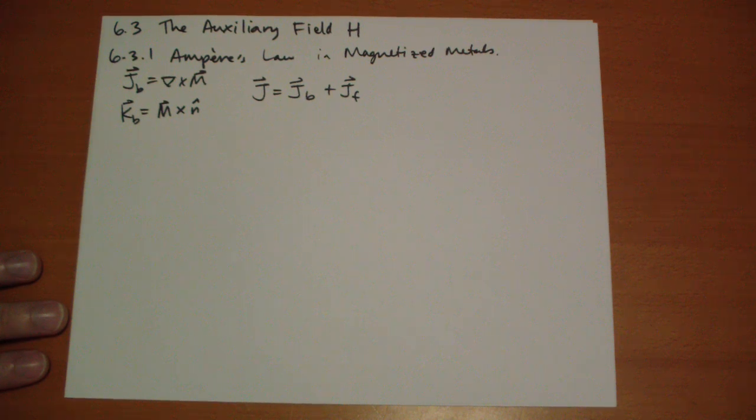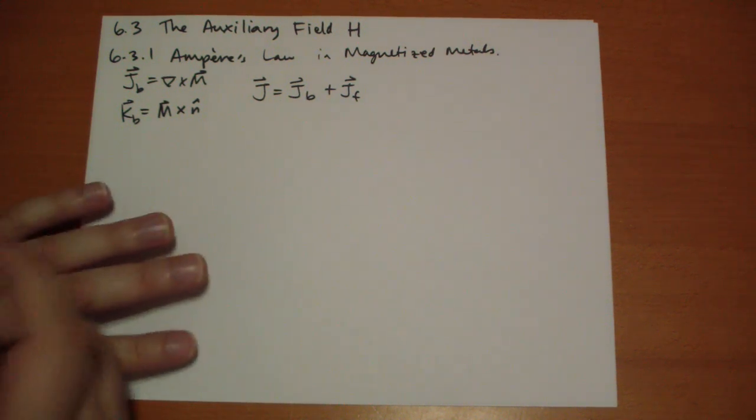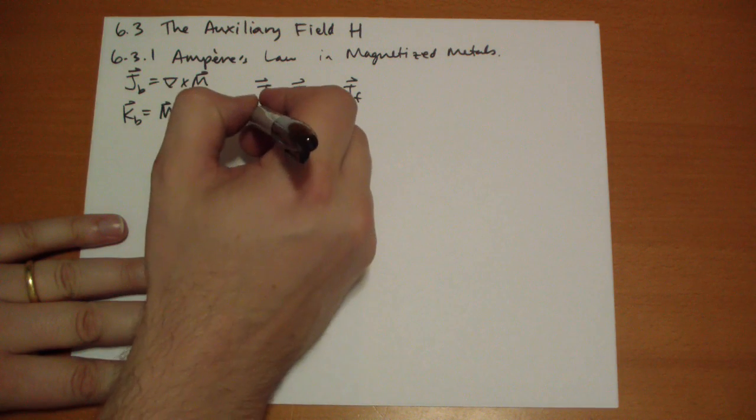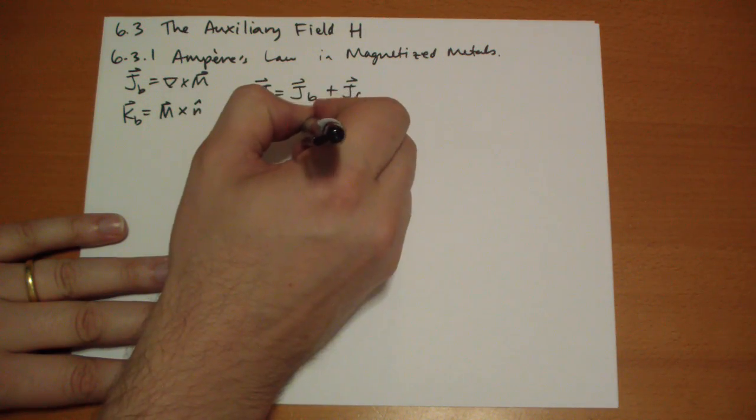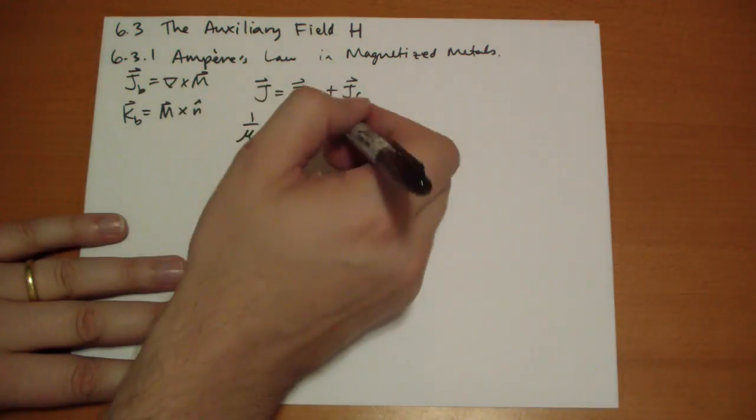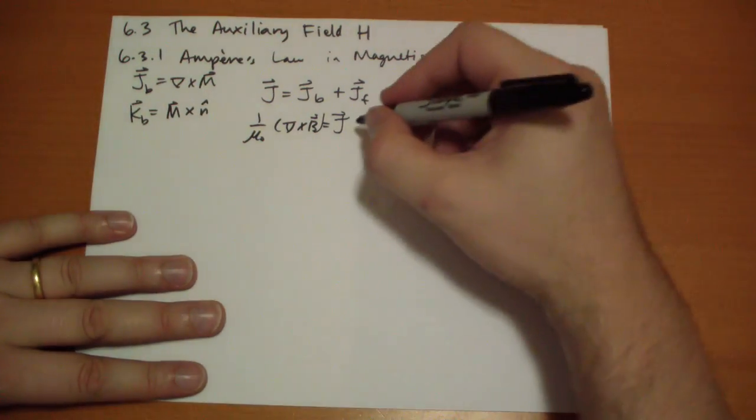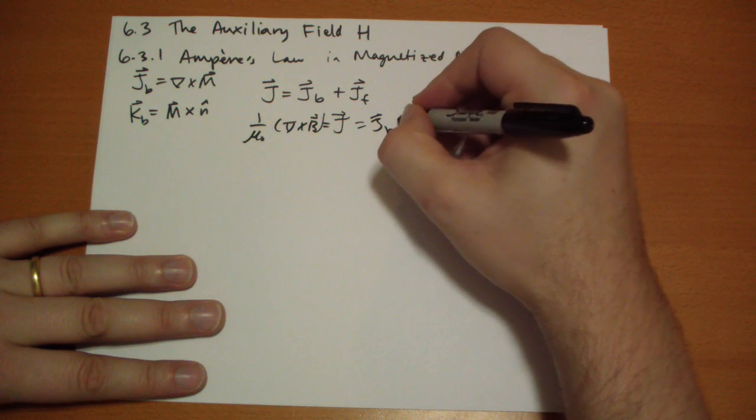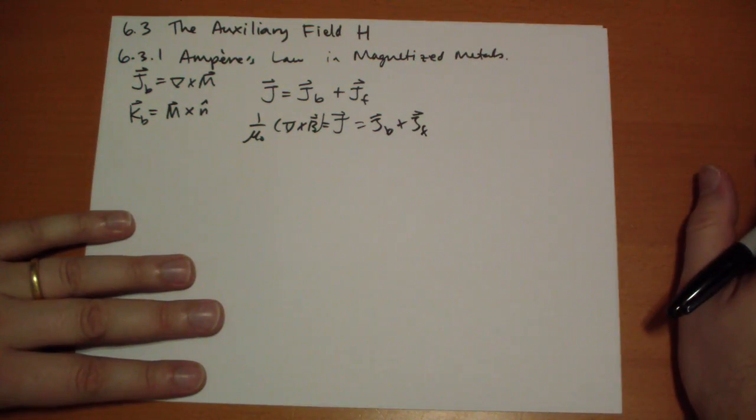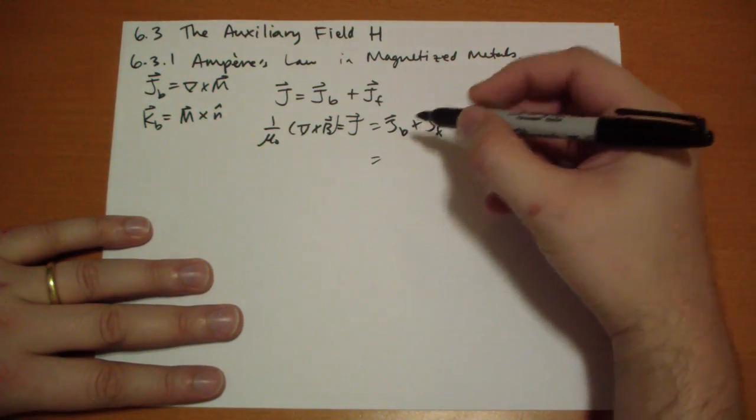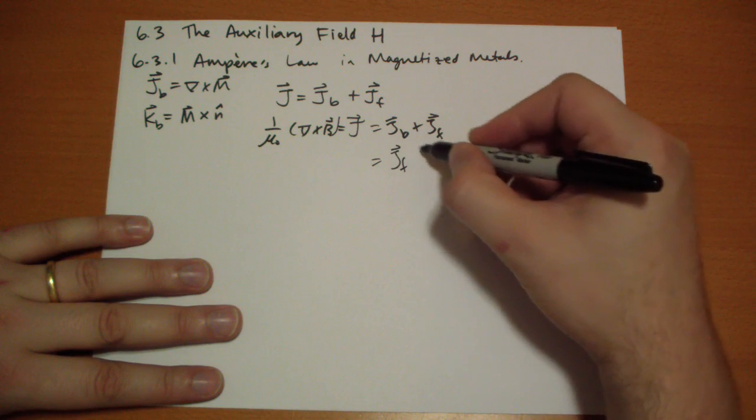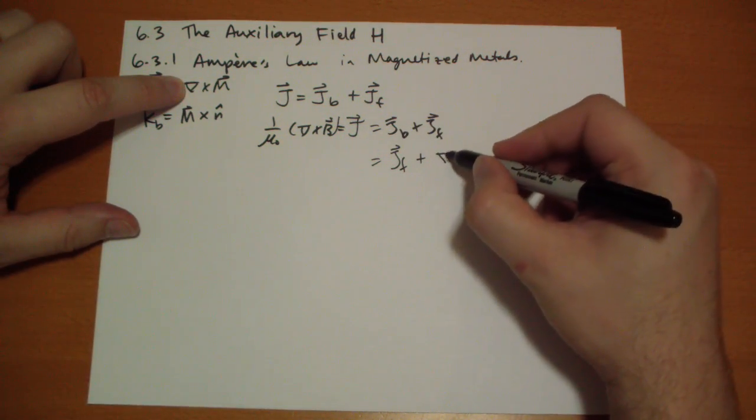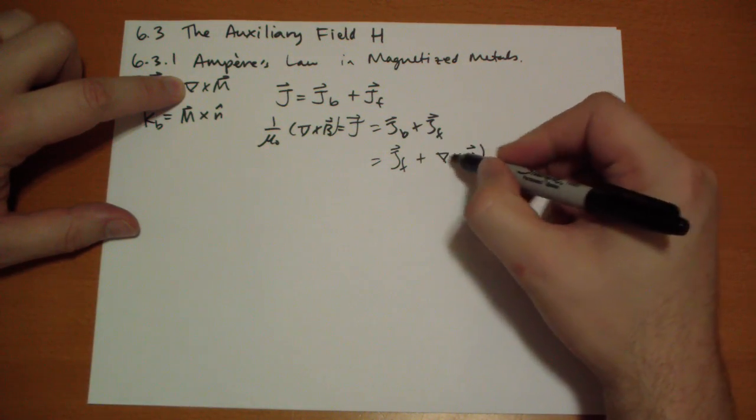The end result is that when we write Ampere's Law with this new j vector, we have 1 over mu naught of the curl of B is equal to j vector. Well, that's just jB plus jF, the free and the bound currents. So we basically get the free current plus the bound current, which is the curl of the magnetization.